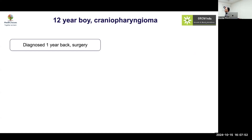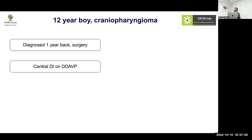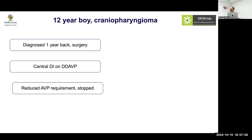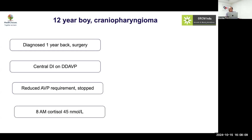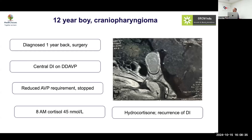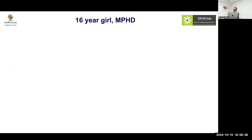Case: 12-year-old boy with craniopharyngioma, post-surgery, known central diabetes insipidus on DDAVP. Parents report decreasing urine output. DDAVP was stopped but still no polyuria. What went wrong? This is the AVP-cortisol interaction. Whenever a patient on treatment for diabetes insipidus suddenly needs less AVP, or a diabetic needs less insulin, or a hypertensive needs less antihypertensive — think cortisol deficiency. Hydrocortisone was given and recurrence of diabetes insipidus was found — cortisol deficiency had been masking the DI.